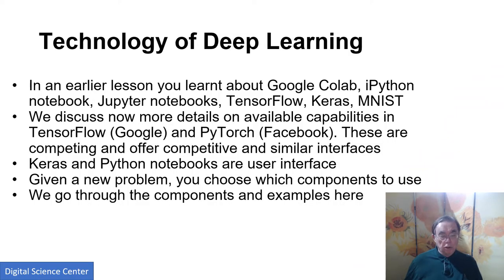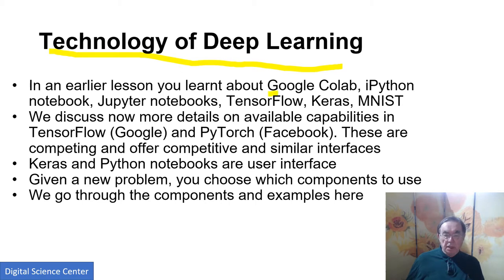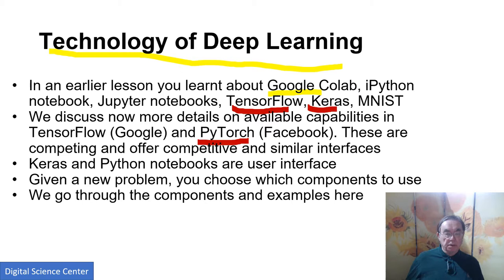This is Jeffrey Fox, and we have the first real slide of this section: Technology of Deep Learning. It tries to put things in a bit of context. In a previous lesson, we looked at Google Colab, IPython Notebooks and Jupyter Notebooks — they're the sort of user interface. Then we actually use TensorFlow, Keras, and the MNIST dataset. TensorFlow and PyTorch are the two currently most important deep learning systems. Keras is a user interface which used to cover everything — PyTorch, TensorFlow, and MXNet. Now it just covers TensorFlow.